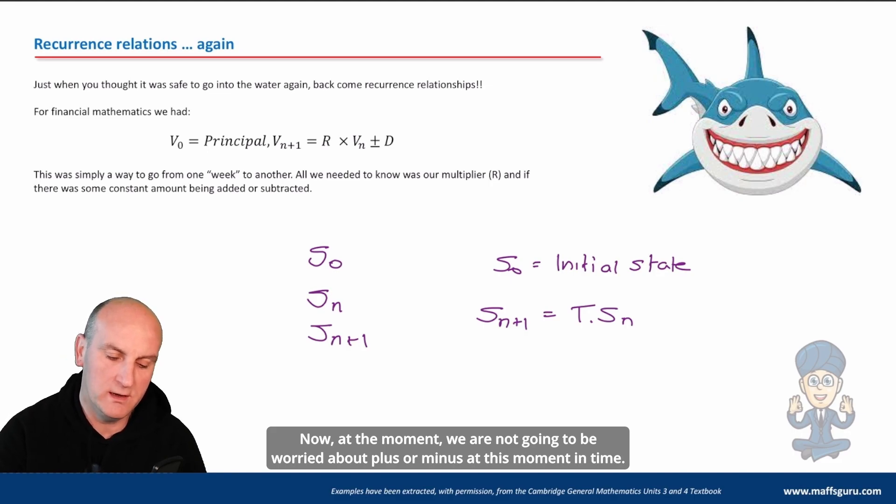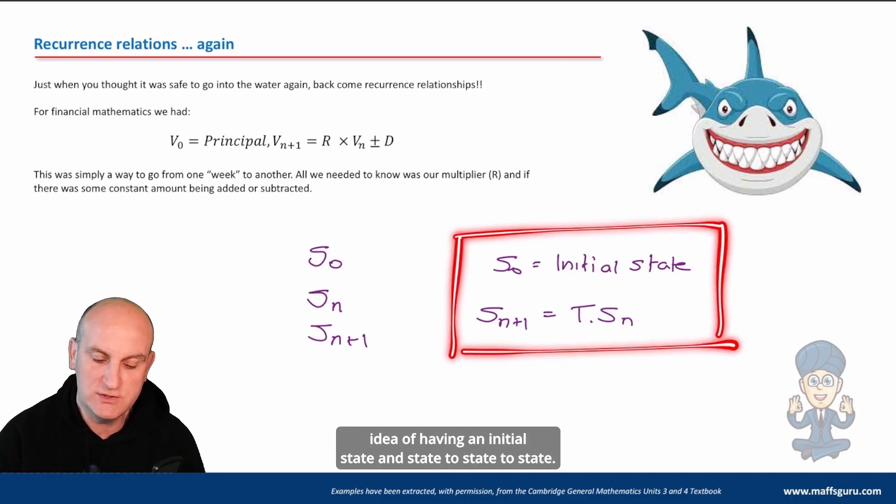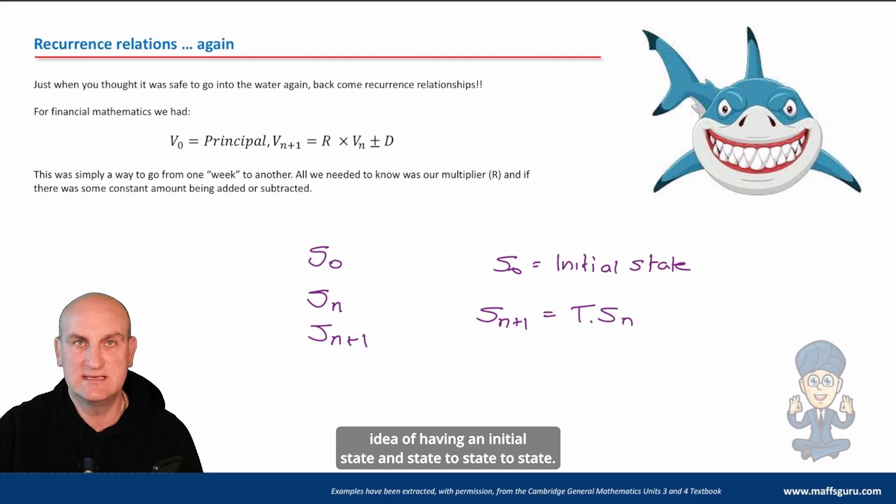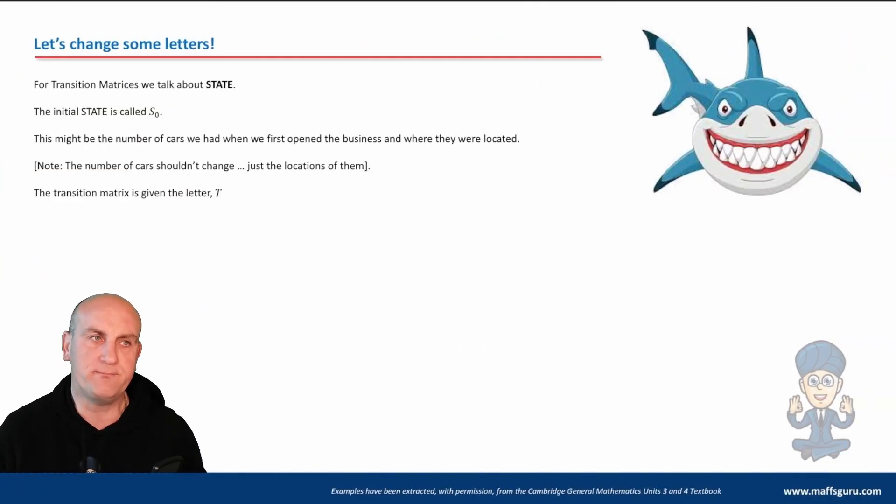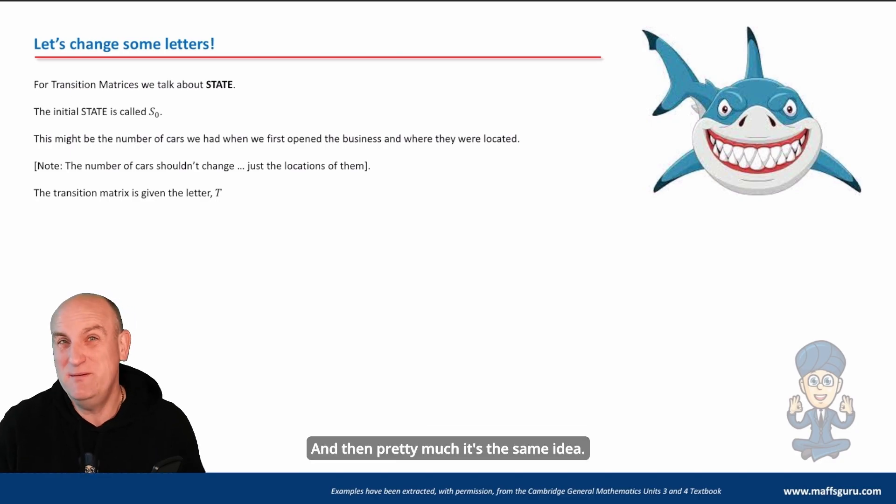Now at the moment we are not going to be worried about plus or minus, that will come a little bit later on. But the general idea now is we're going to be looking at having an initial state and state to state to state. Now again, letters here really, really important. Just realize that we're going to have S₀ rather than V₀ and T instead of R, and then pretty much it's the same idea.